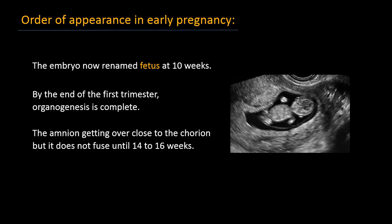The embryo is renamed fetus at 10 weeks. By the end of the first trimester, organogenesis is complete. The amnion is getting close to the chorion, but it does not fuse until 14 to 16 weeks.